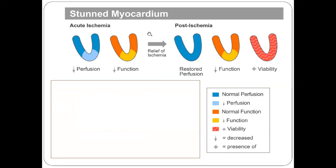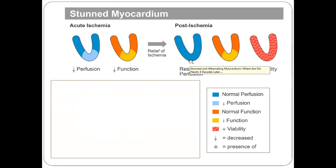Now if you have done acute revascularization of the vessel — whichever coronary artery was blocked has been cleared — relief of ischemia has occurred. What happens is the perfusion in that area is maintained, but the function does not return to normal immediately; it takes some time. This phase, where perfusion is maintained but there is still decreased function, means the tissue is viable — and this is called stunned myocardium. Even after restoring perfusion in that area, the movement is still reduced for some period of time.